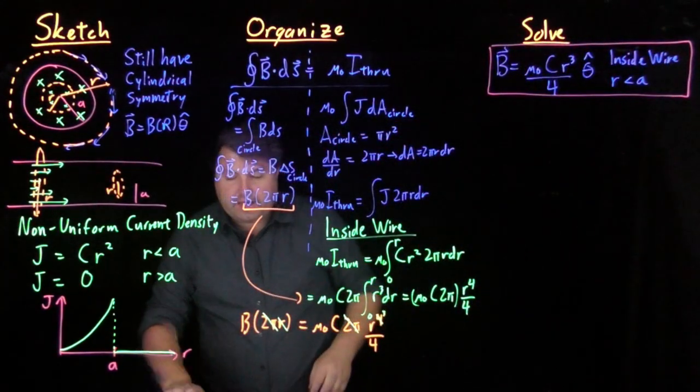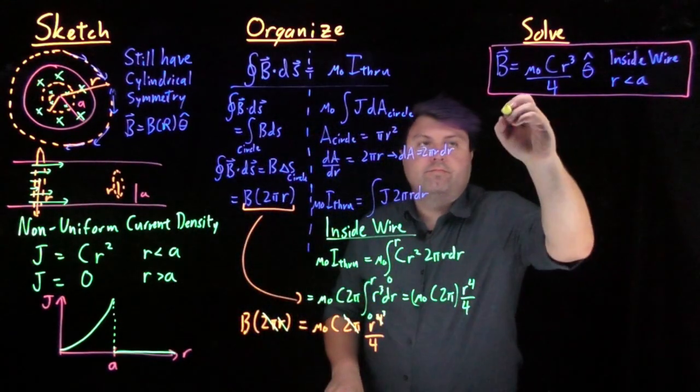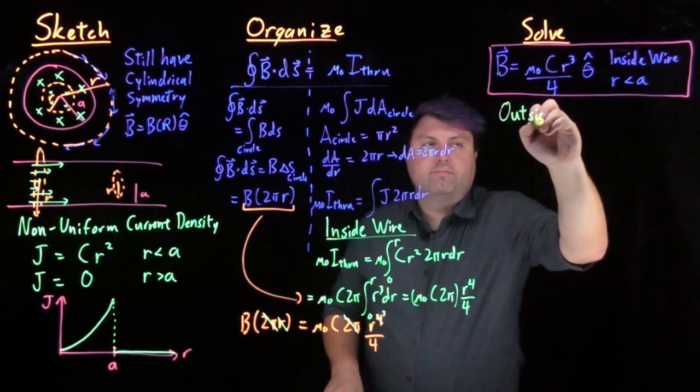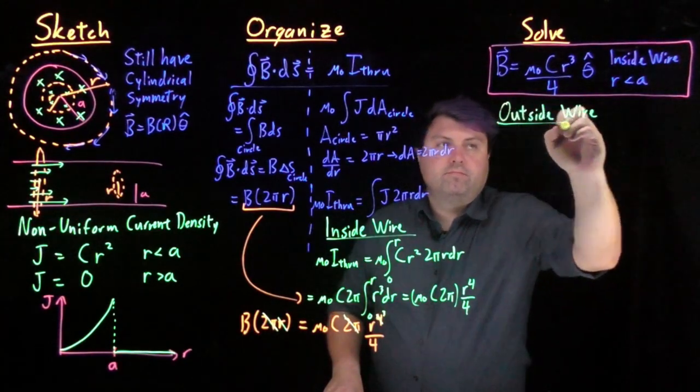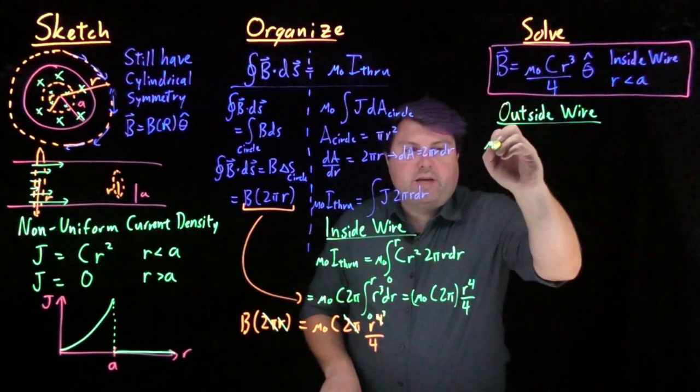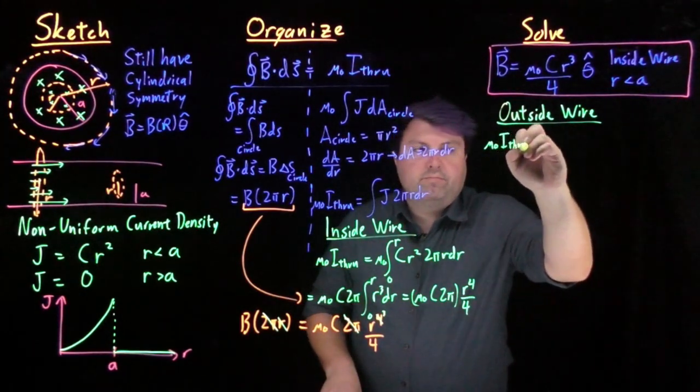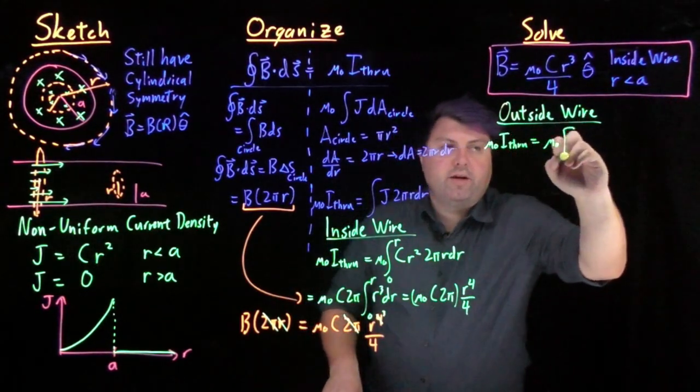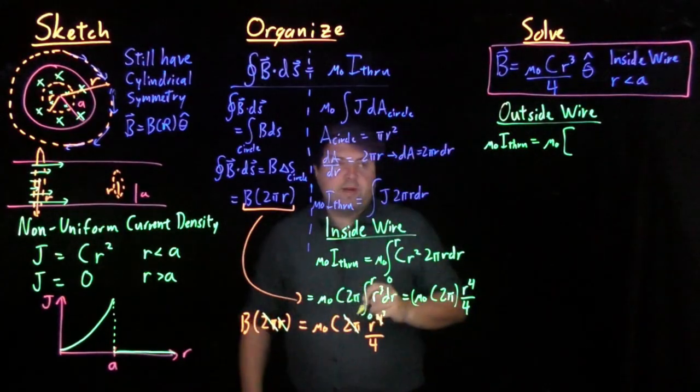If we want to look at outside of the wire, we continue with this same step, mu naught i through equals mu naught.